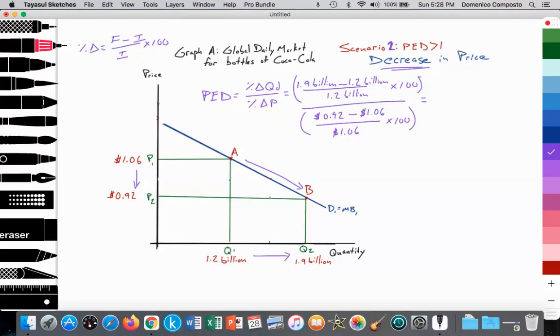So when we work that out, we'll see here that $1.9 minus $1.2, that is $0.7 billion over $1.2 billion. And that's going to work out to 0.583 repeating, and we'll come back to that. We're going to have to multiply that by 100. And that's going to be divided by $0.92 minus $1.06. So that's negative 0.14 divided by $1.06. That's going to work out to negative 0.132, let's say 0.07, multiplied by 100.